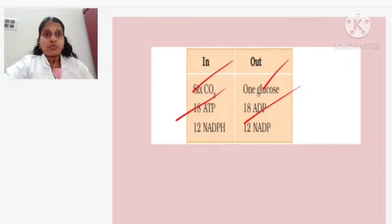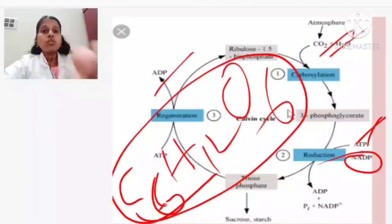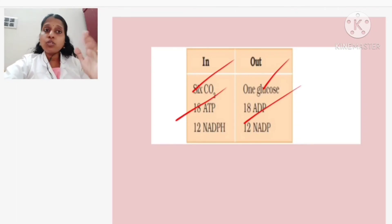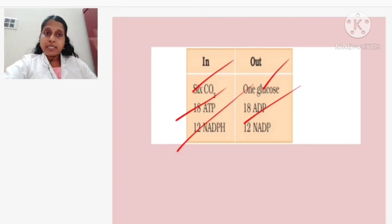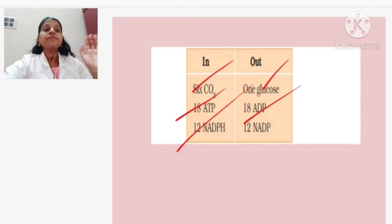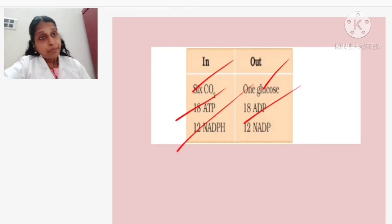For NADPH2: 2 molecules are used per cycle. For 6 cycles: 6 × 2 = 12 NADPH2 molecules are used, converted back to NADP+. So to summarize: 6 CO2 molecules fixed, 18 ATP used (→18 ADP), 12 NADPH2 used (→12 NADP+), and 1 molecule of glucose is formed.